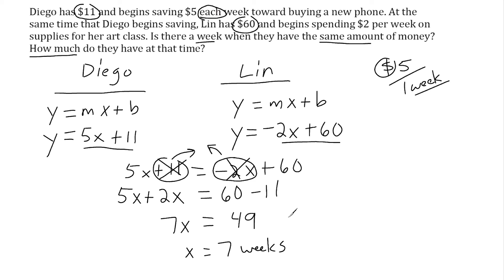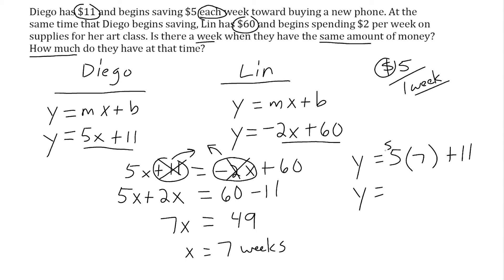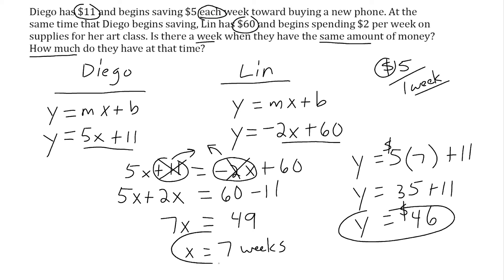We now know that at the 7-week mark, Lynn and Diego have the same amount of money. To find out how much, we take one of our original equations — let's use Diego's equation, y equals 5x plus 11 — and substitute x with 7. Multiplying $5 by 7 weeks gives $35, and adding the $11 he started with gives $46 after 7 weeks. So 7 weeks later, Lynn and Diego would each have $46.